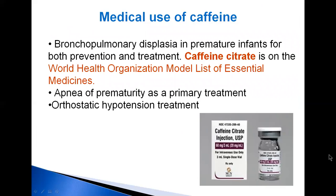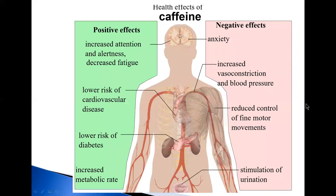Caffeine is used in the treatment of bronchopulmonary dysplasia in premature infants for prevention and treatment, apnea of prematurity as a primary treatment, and orthostatic hypotension treatment. Caffeine citrate is on the World Health Organization model list of essential medicines.